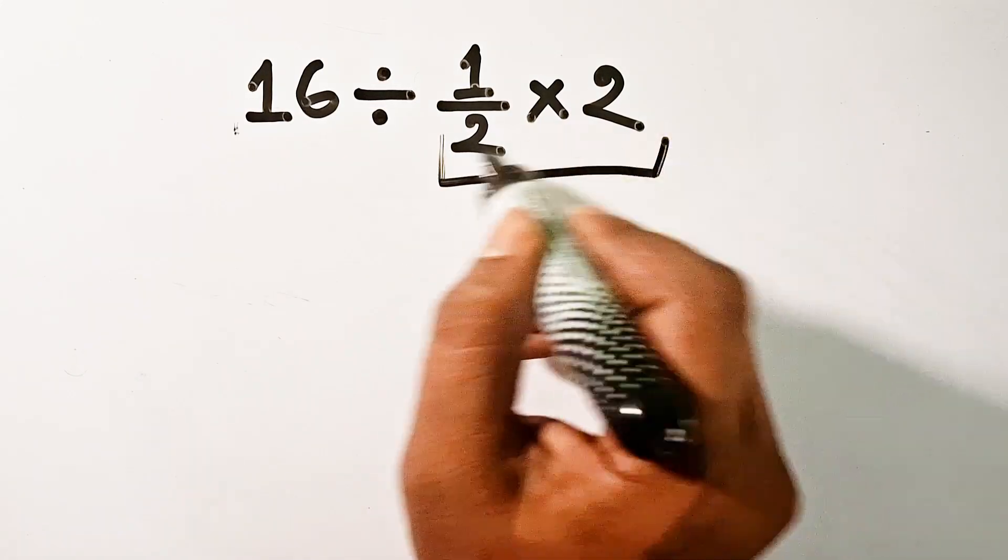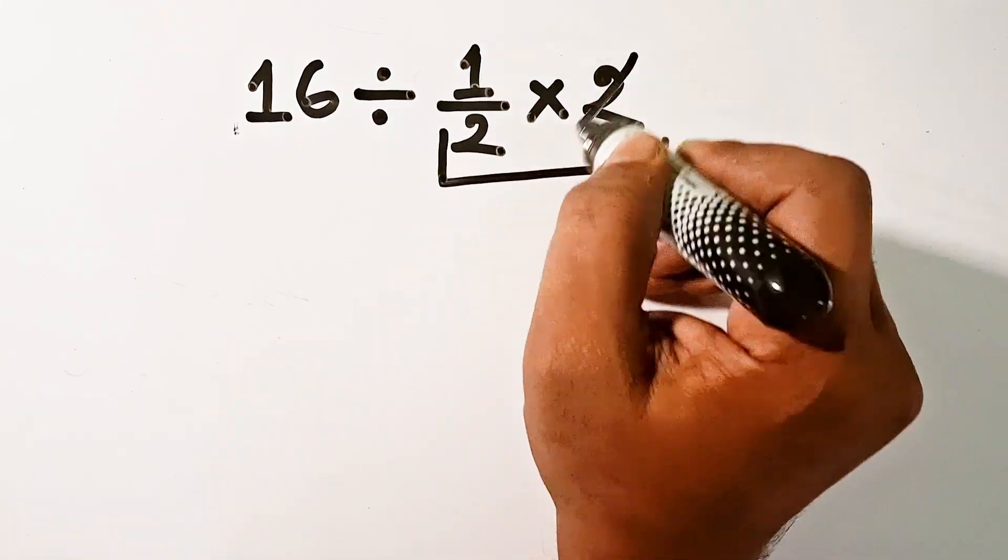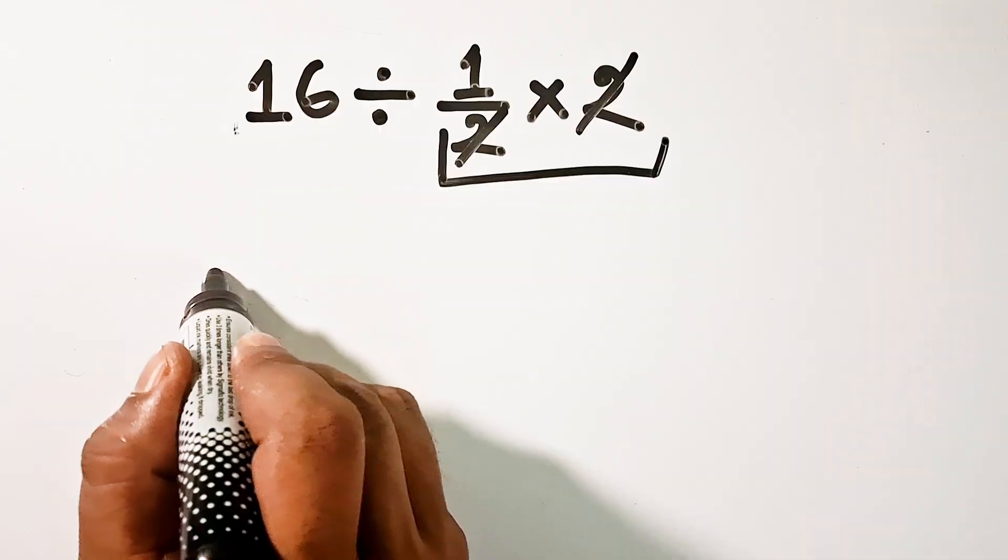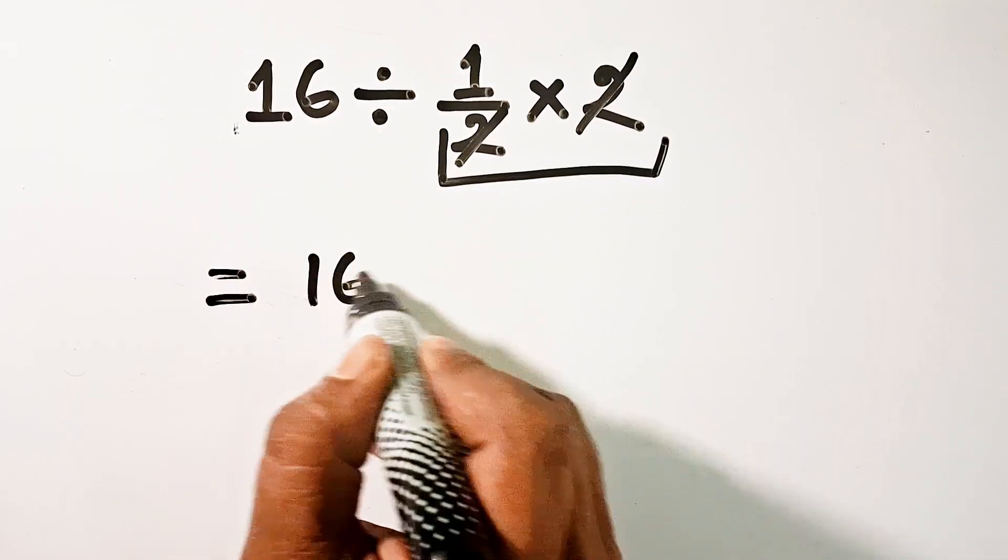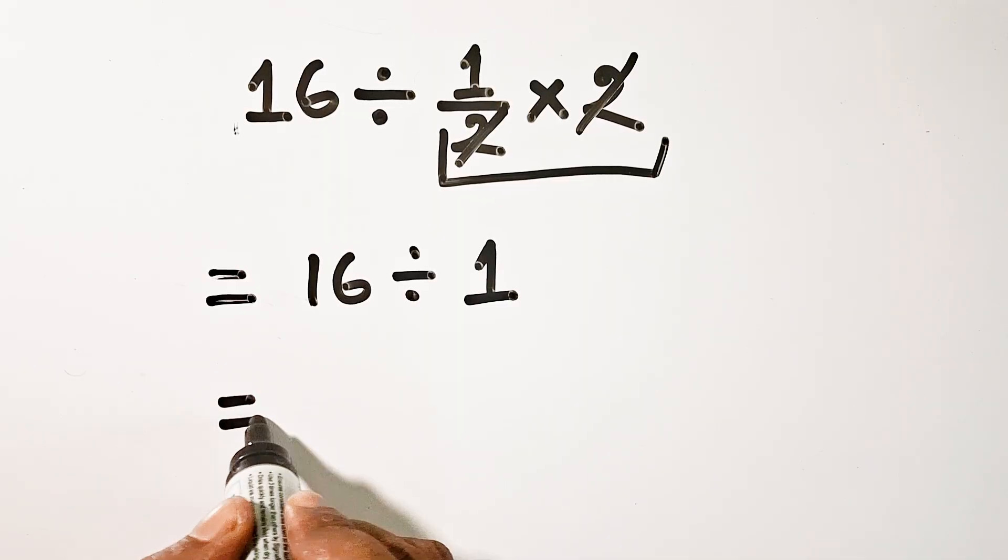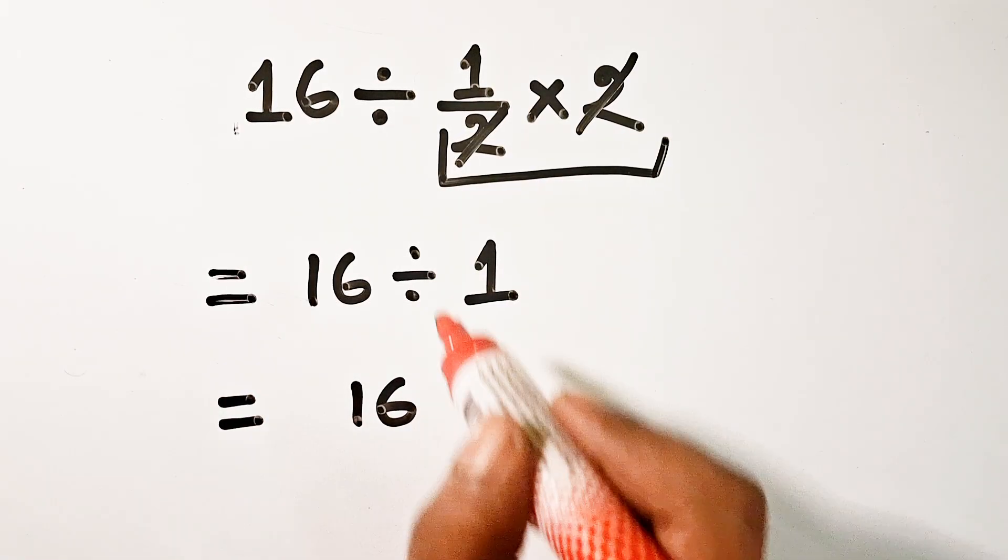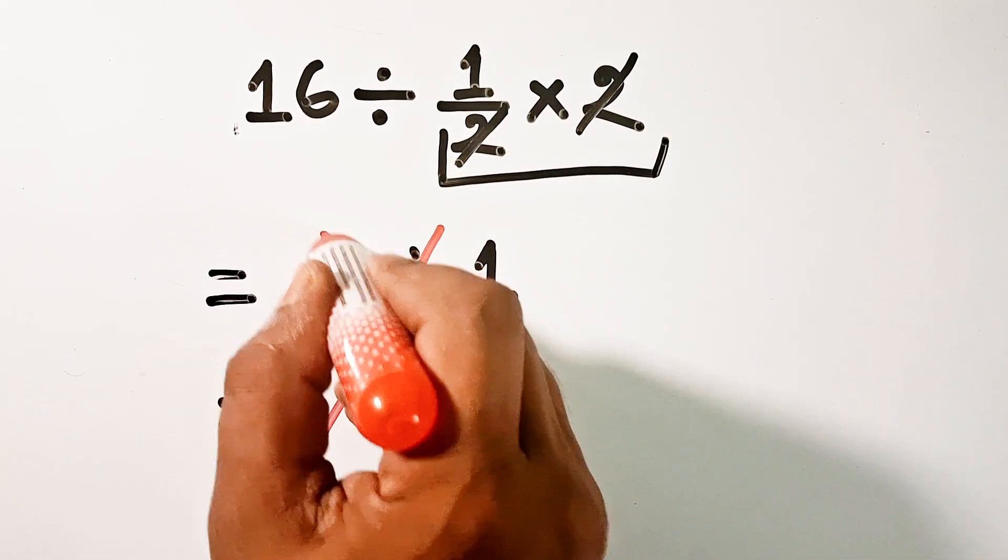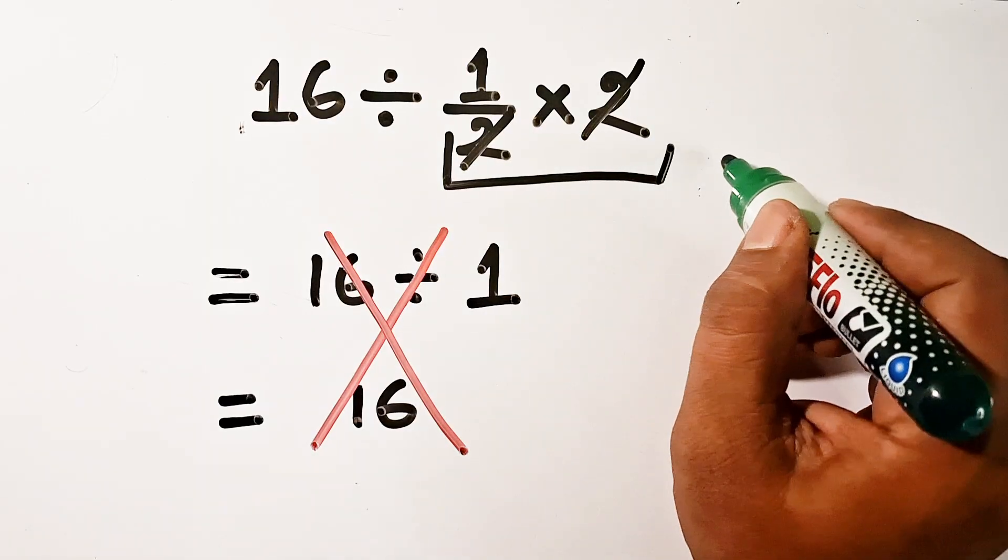Hello guys, today we will do another simplification problem. 1 by 2 into 2 is equal to 1, so 16 divided by 1 basically equals 16. But it is totally wrong because we didn't follow a rule.